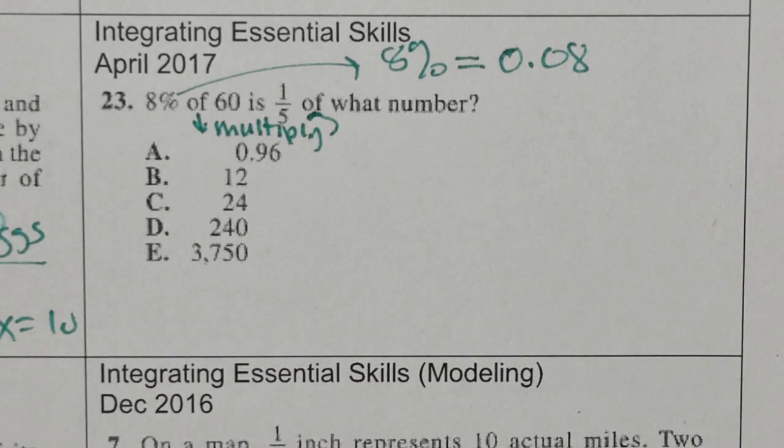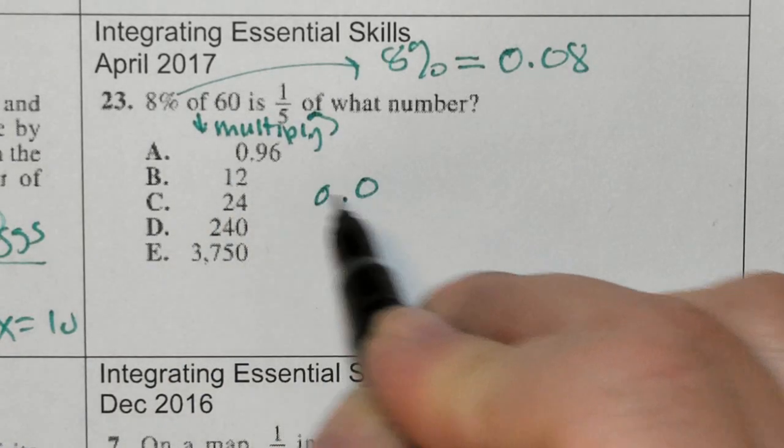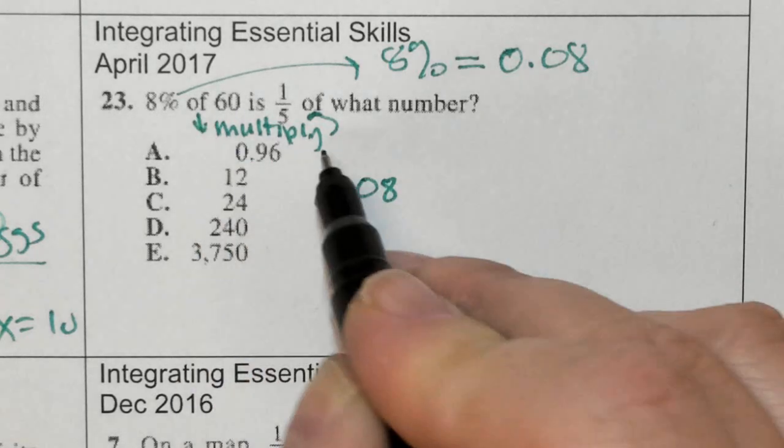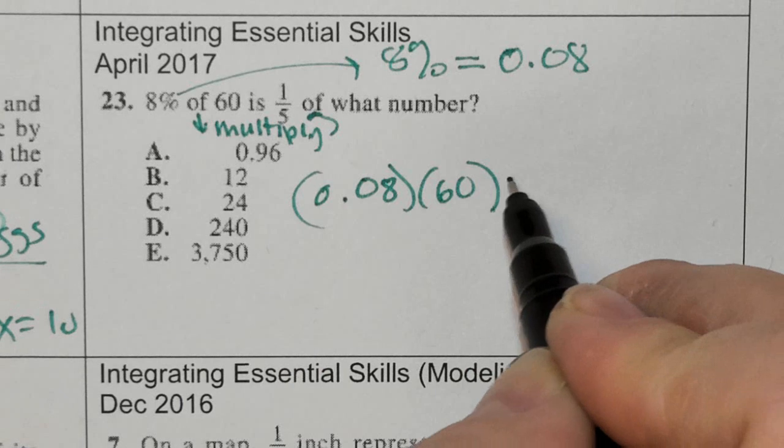So I'm going to translate this from a question into math. 8% written as a decimal is 0.08. 'Of' means to multiply. 'Is' means equals.